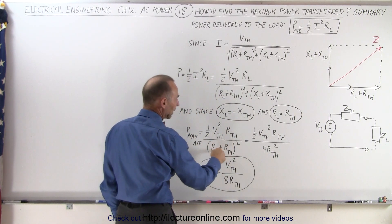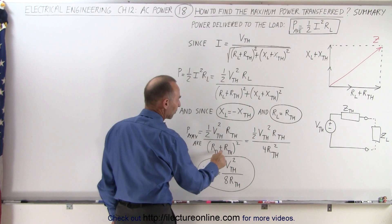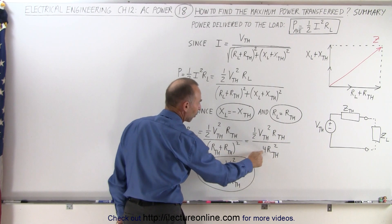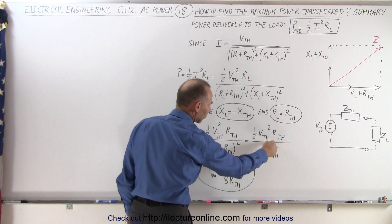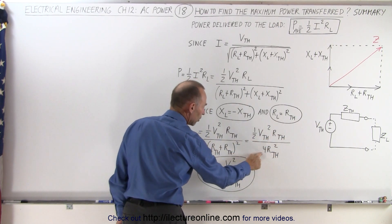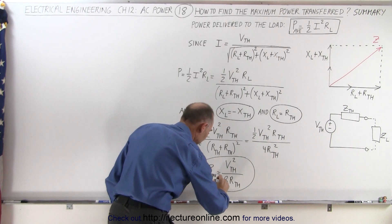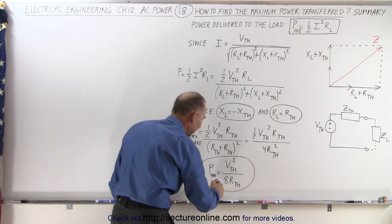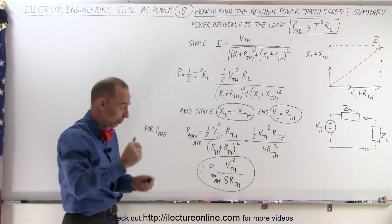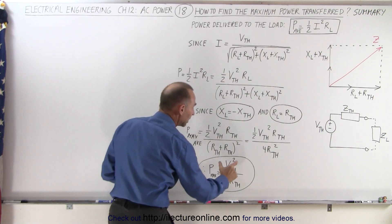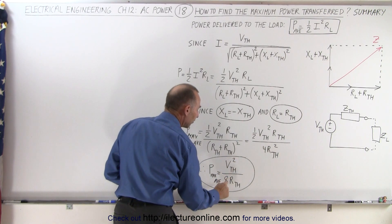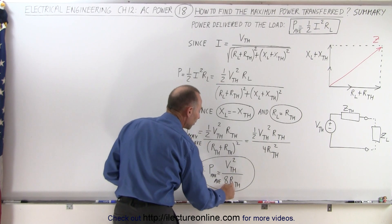If we take the denominator and square it, we get two times the resistance of the Thevenin circuit squared. That gives us 4 R squared. This R can cancel with one of those. The two goes to the denominator, and the maximum average power delivered, we need to make sure we understand that that's the maximum average power delivered, of course it's a sinusoidal circuit, that is equal to the Thevenin voltage squared divided by eight times the Thevenin resistance.